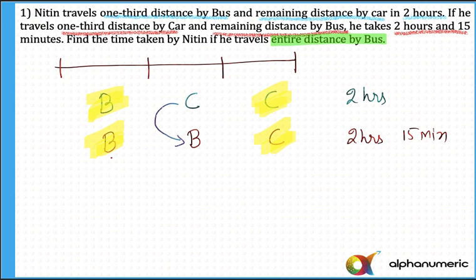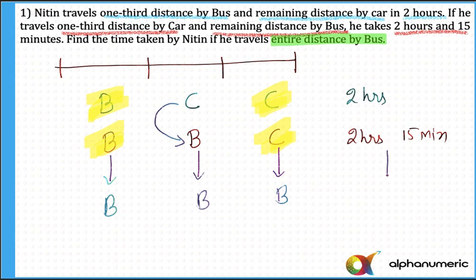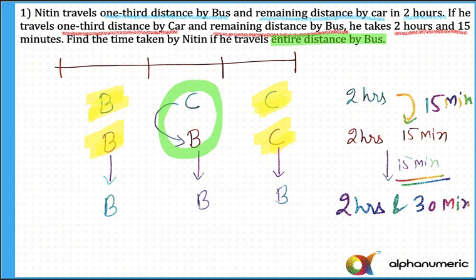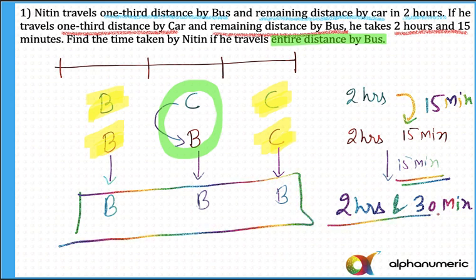So the first part is bus in both cases — no change in time. The second part is also bus in both cases — no change. The moment I shift the third part from car to bus, there is a further increase of 15 minutes. So the total time taken will be 2 hours and 30 minutes. If he travels the entire distance by bus, the total time is 2 hours and 30 minutes — that is your answer. A simple logical explanation without any formula.